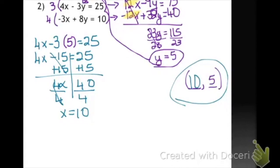So again, let's go back. I looked at my coefficients and I had to create opposites. I did that by multiplying one equation by 3 and another equation by 4 to get 12x and negative 12x, so that my x terms would be eliminated.